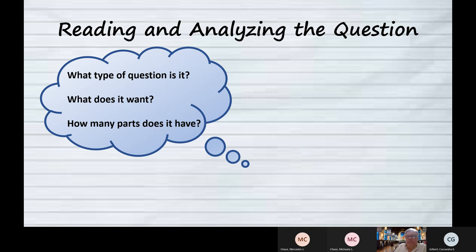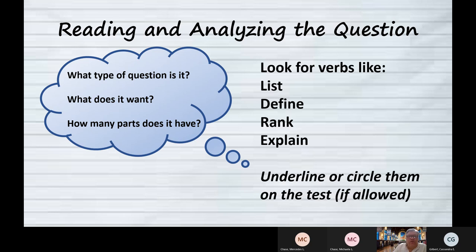They saw the first task and did that, but they didn't read the whole question to see there was an additional task. So we're looking for those verbs like list, define, rank, explain. Because if there are two or three of them in the question, that means you've got two or three things to do.